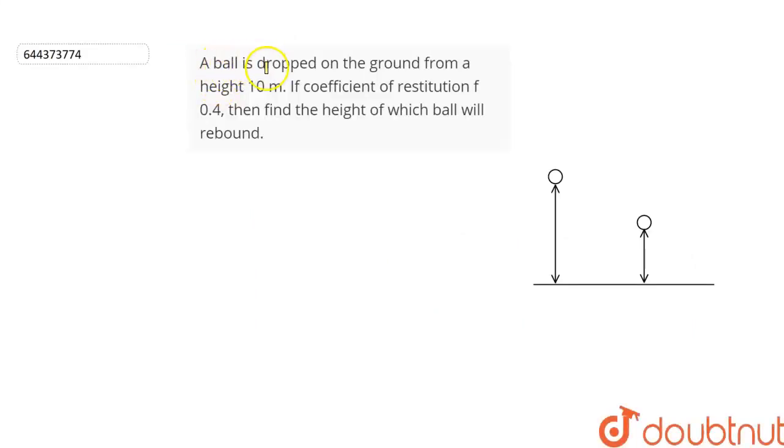The question is, a ball is dropped on the ground from a height of 10 meters. If the coefficient of restitution is 0.4, then we have to find the height of the ball to which it will rebound. Let's find out.